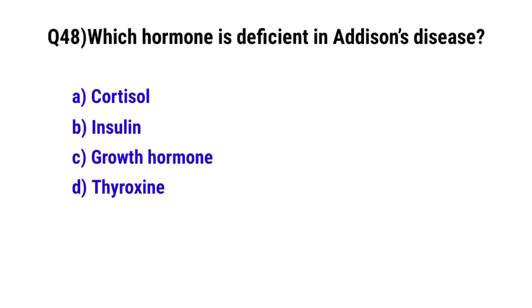Question number 48: Which hormone is deficient in Addison's disease? The correct option is A: cortisol.